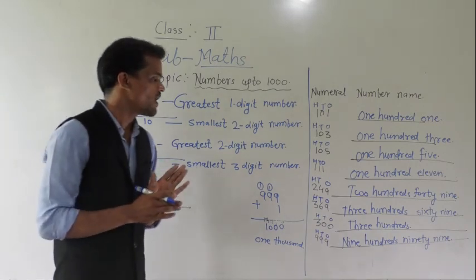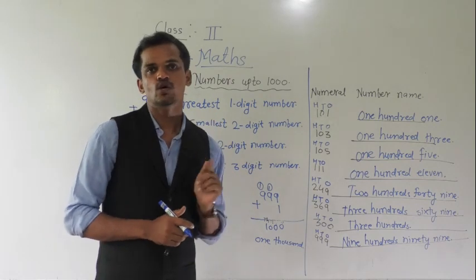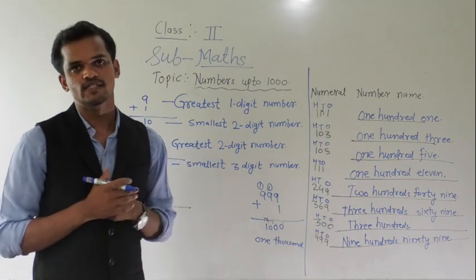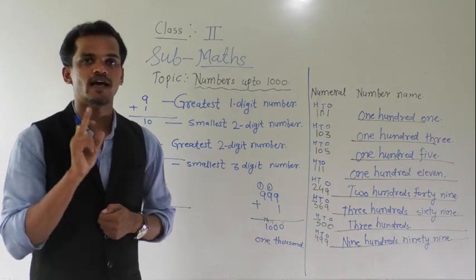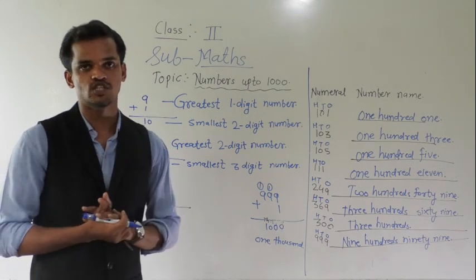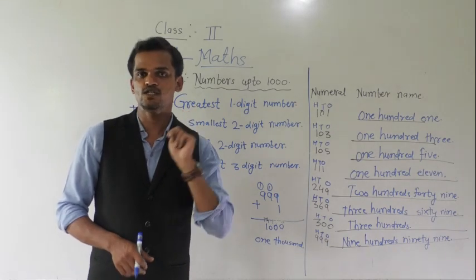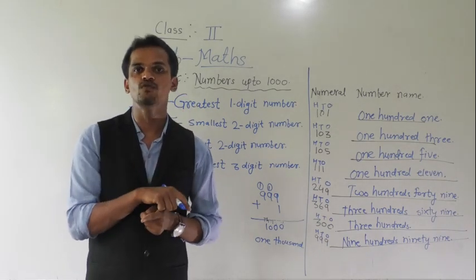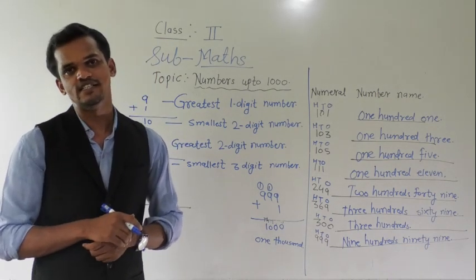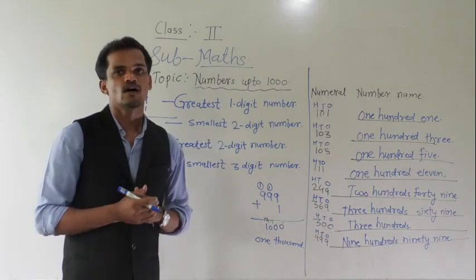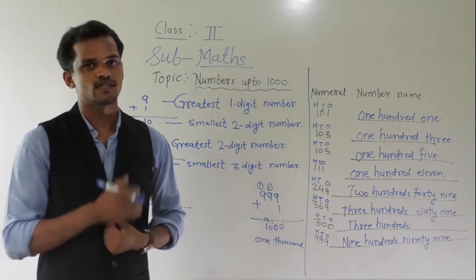Today, we have learnt how to read 3-digit numbers. We know 9 is the greatest 1-digit number; if we add 1 into 9, we get 10, which is the smallest 2-digit number. 99 is the greatest 2-digit number; if we add 1 into 99, we get 100, which is the smallest 3-digit number. I hope you understood this concept. Thank you.